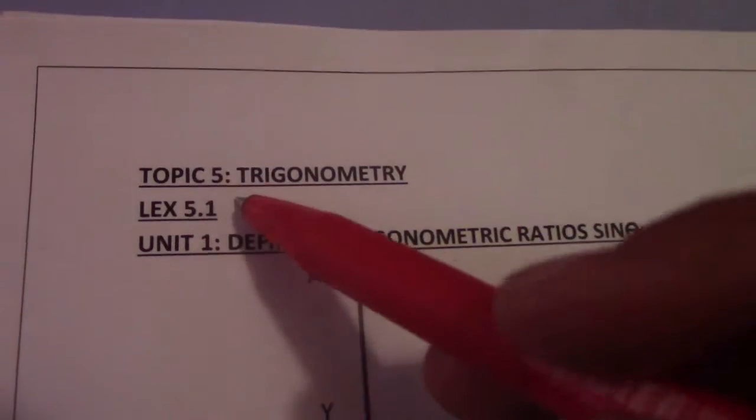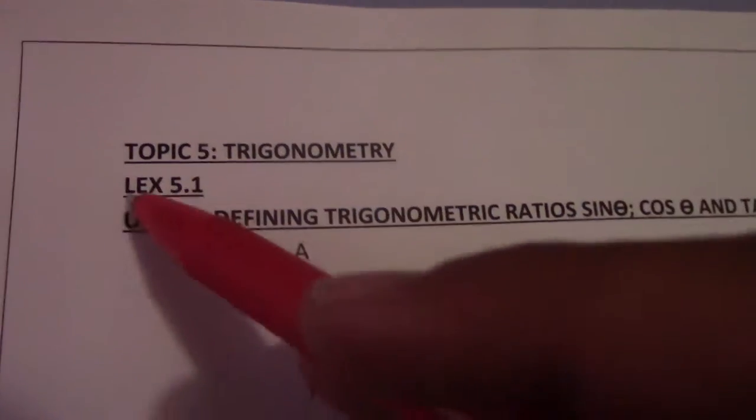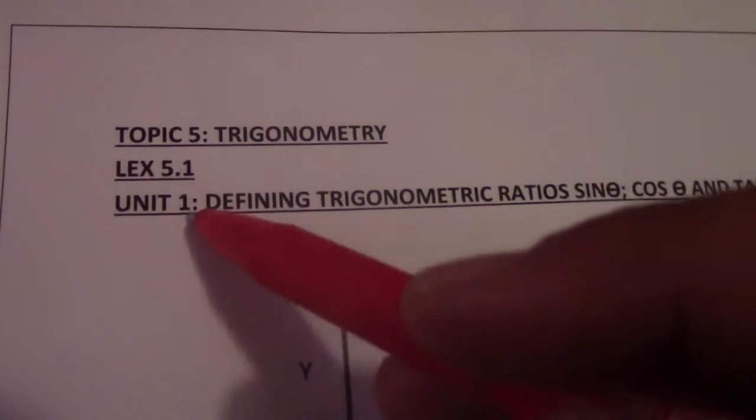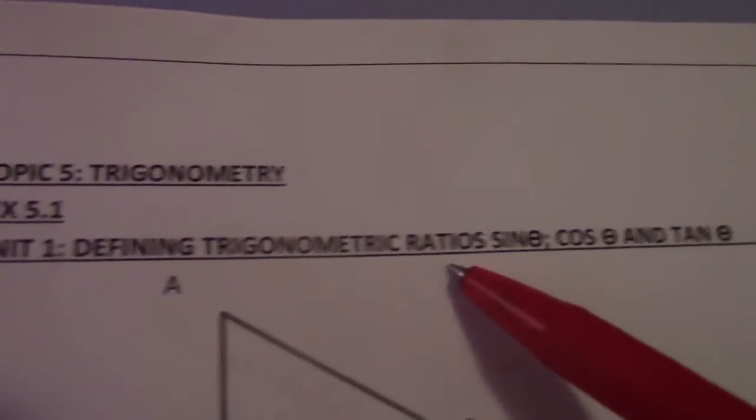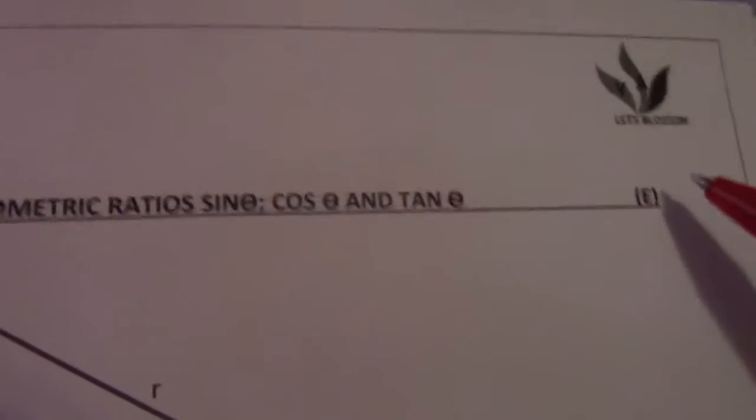All right, good day and welcome. Topic 5, Trigonometry. In learning exercise 5.1 of the first unit, we'll be looking at how we define trig ratios, specifically sin, cos, and tan.